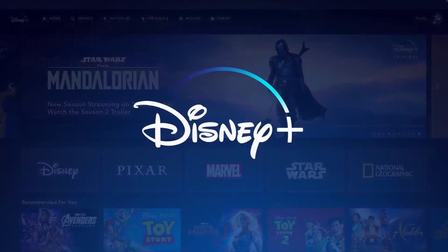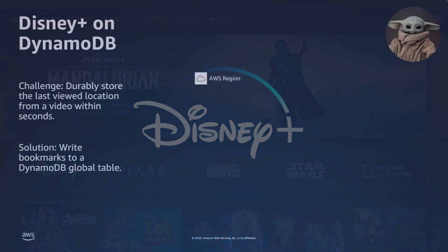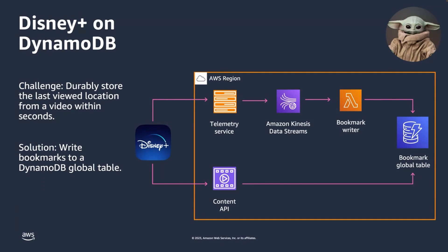Disney Plus is a big user of DynamoDB. Their first use case was the need to store the last viewed location — what they call a bookmark. As you're watching a TV show or a movie, the player — whether a Roku app, iPad app, or web browser — sends the current position in the stream every few seconds so you can stop and resume from where you left off. That data is stored inside a DynamoDB global table. They have two different paths for accessing that data: one for writing and one for reading back to restart the stream.